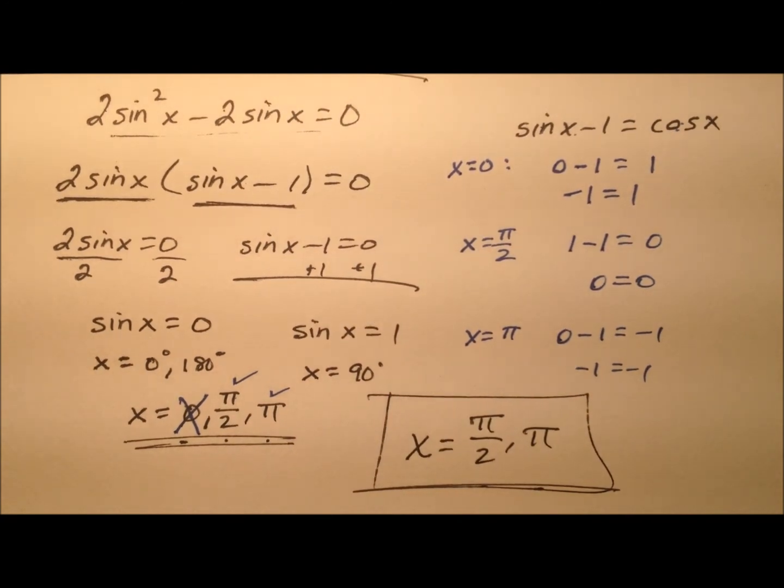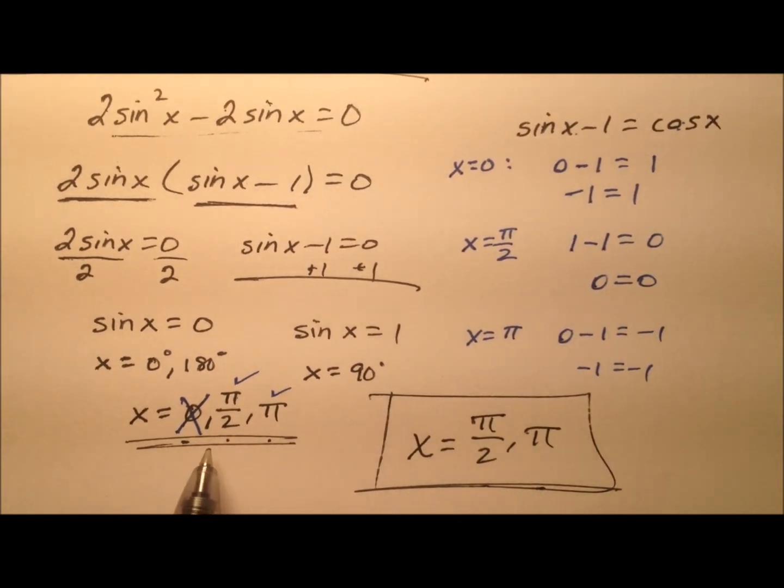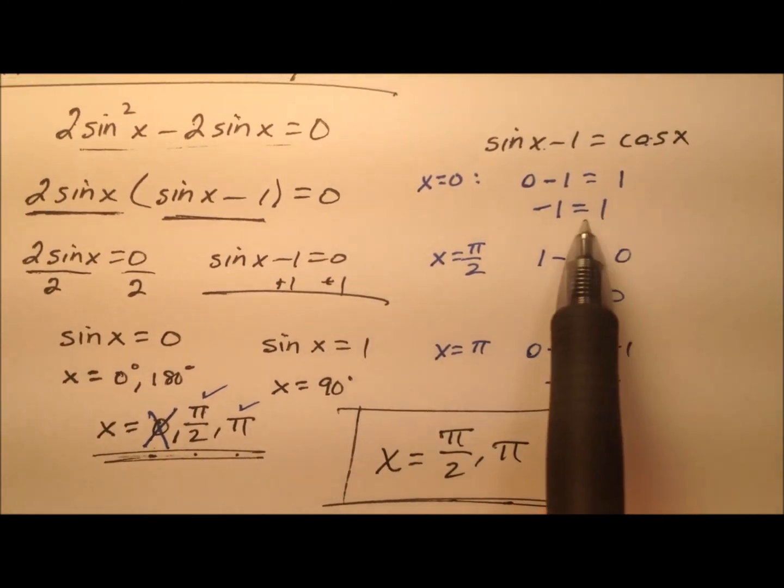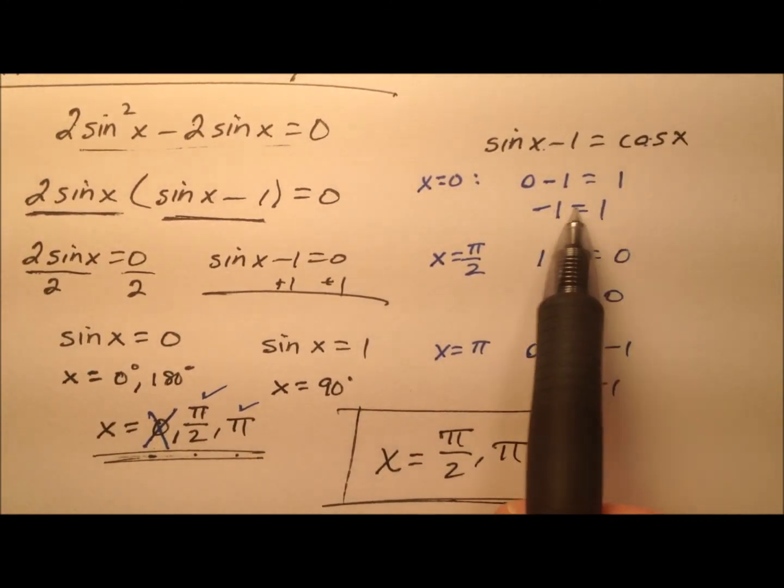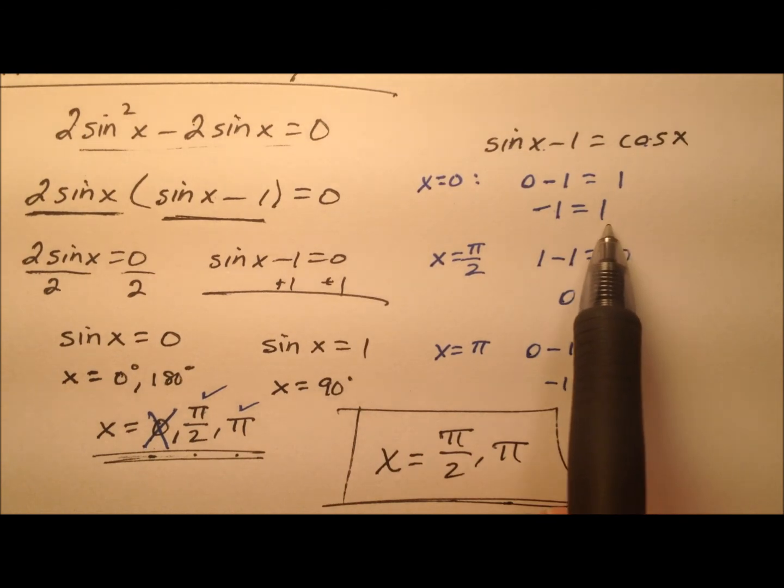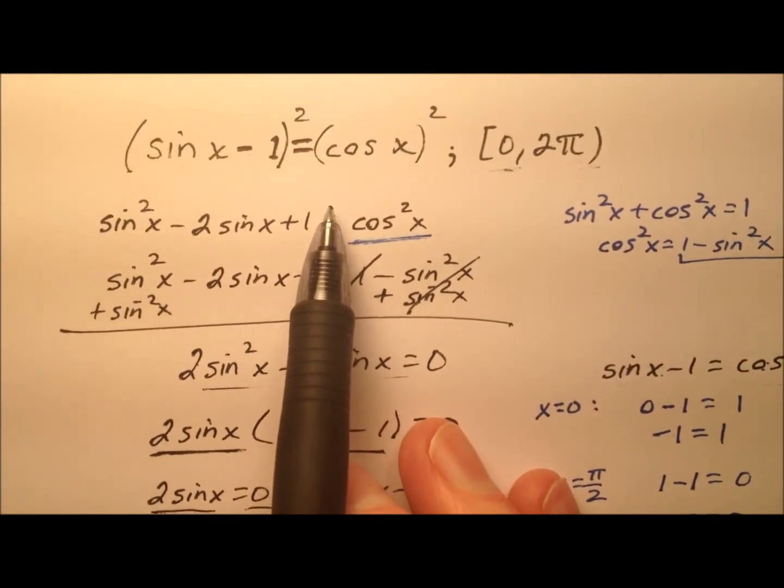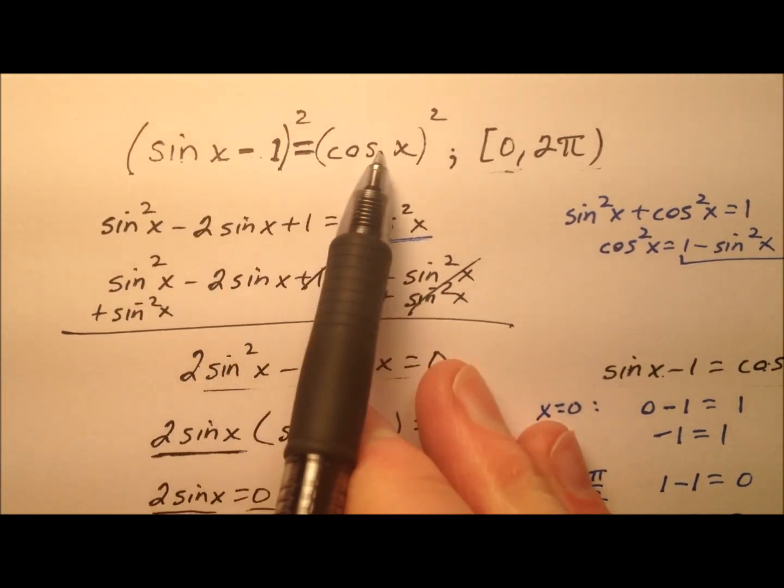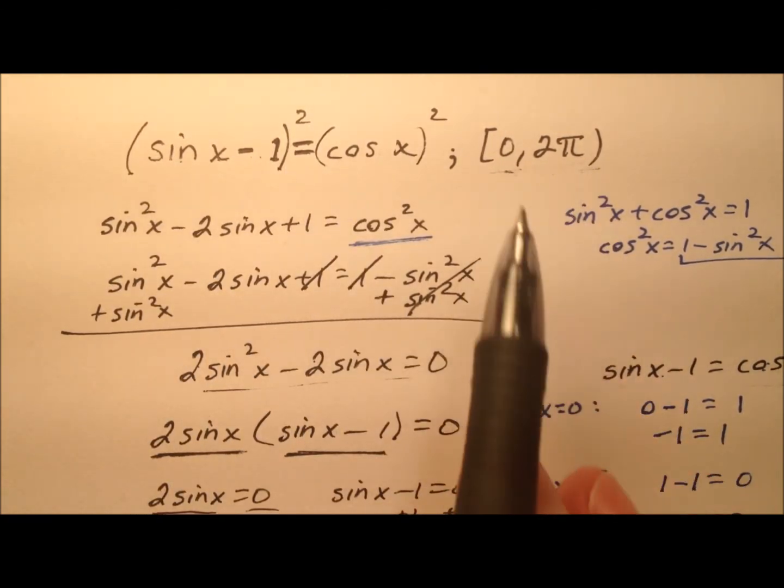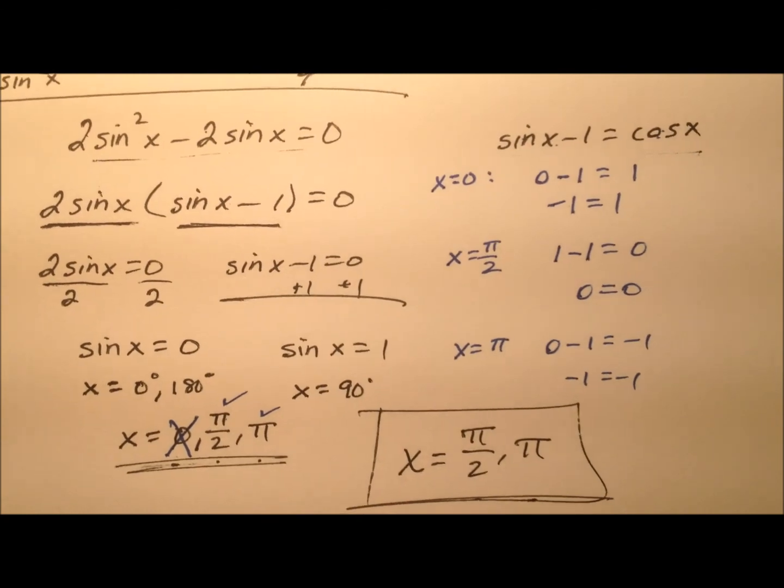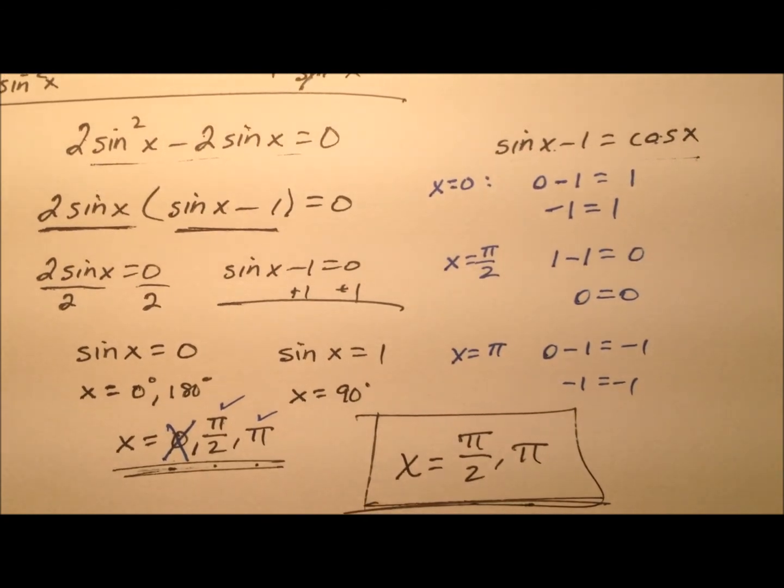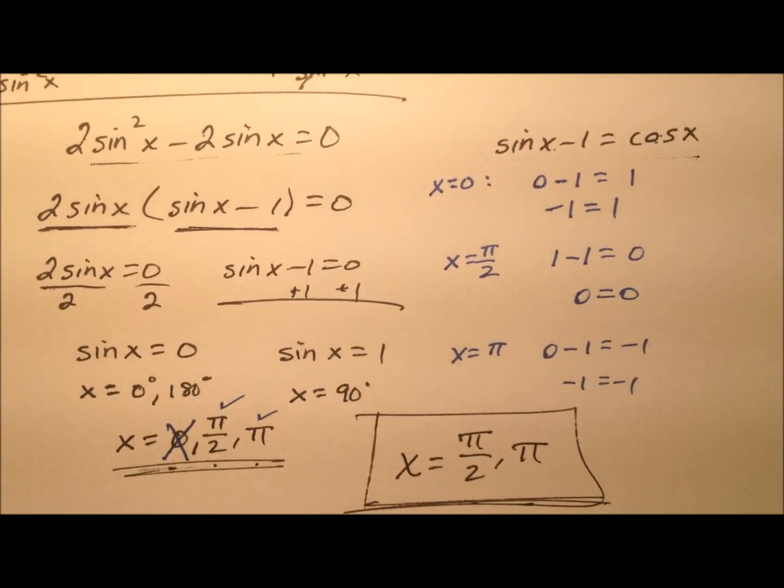And again, when you square both sides, it opens up the possibility for extraneous solutions to come into play. Because of course, if we had squared both sides here, 1 equals 1 would have been true, but that wasn't the original equation. So here we have our original equation: sine of x minus 1 equals cosine of x in our interval 0 to 2π. And here are our two solutions in radians, x equals π over 2 and π.